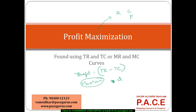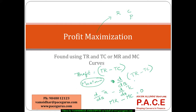We take the derivative with respect to quantity — the derivative of TR minus TC. The derivative of TR is marginal revenue, and the first derivative set equal to zero gives us: marginal revenue minus marginal cost equals zero. So, only when MR equals MC, that particular output is the profit maximization output, and every firm should target production at that level.